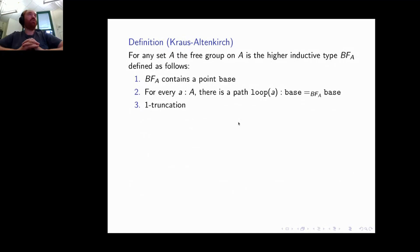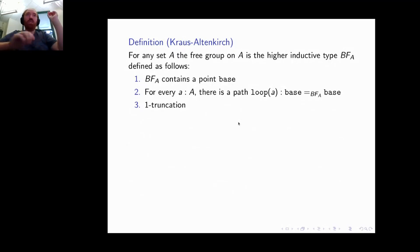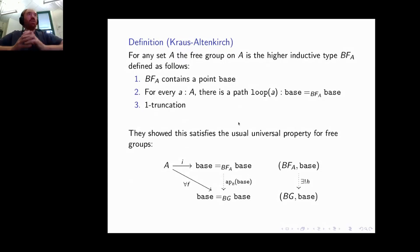Free groups are higher inductive types. Given a set A, we freely define the group containing A by defining a higher inductive type with a base point, and for every element a of the set, we add a path from the base point to itself, then we add one-truncation. This satisfies the usual universal property for free groups.